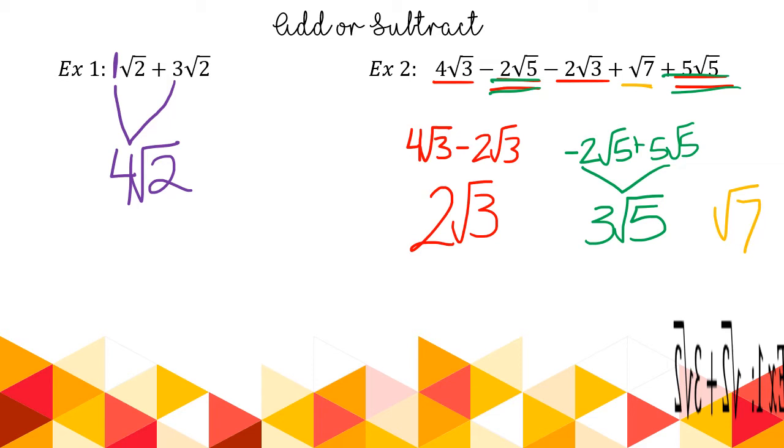And my last radical here doesn't have a like radical. So it just hangs out by itself. Now for the signs in the middle, they're still being added. But I need to make note of the signs. It's a positive 3 and it's a positive √7. Now I'm okay if you write this in different ways. You could write it as 3√5 + 2√3 + √7. Or you could write it as √7 + 2√3 + 3√5. You get the gist. So addition is commutative, which means you could write it in any order. So key thing: you can only add like radicals and you keep the common radical.